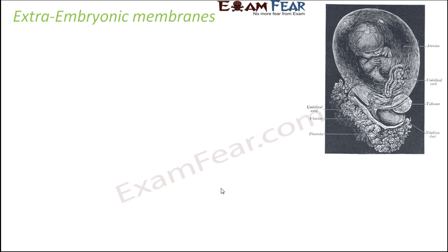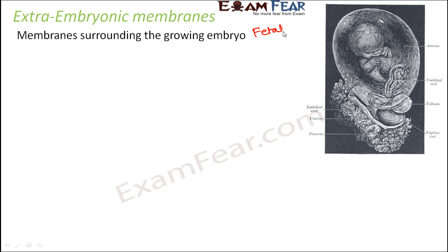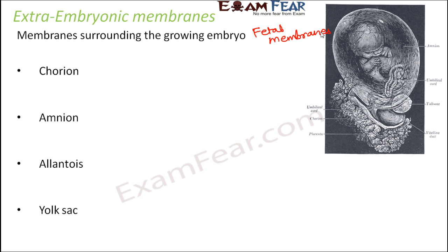Membranes surrounding the growing embryo are called extra-embryonic membranes. They are also known as fetal membranes because they surround the fetus. The four extra-embryonic membranes are: chorion, amnion, allantois, and yolk sac. Each of these serves a very useful purpose for the growing embryo.